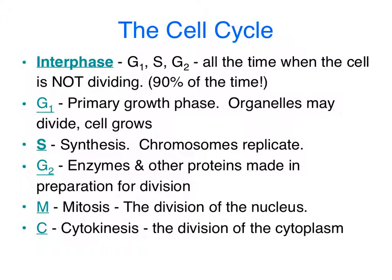When people study the cell cycle, a lot of times they concentrate primarily on mitosis. But mitosis is only a small part of the entire life cycle of the cell. The cell cycle is far more complex, and in fact mitosis is only maybe about 10% or so of the life cycle. The bulk of the cell cycle is spent during a process called interphase.